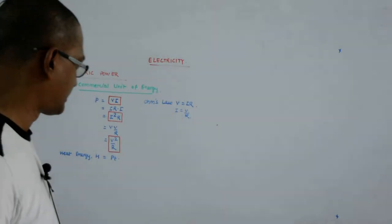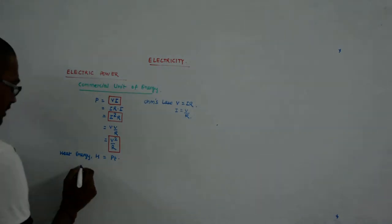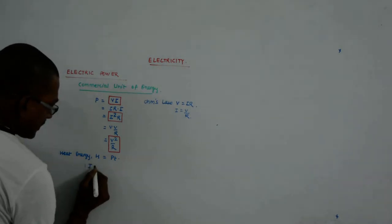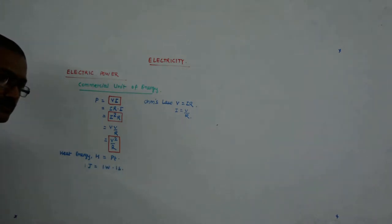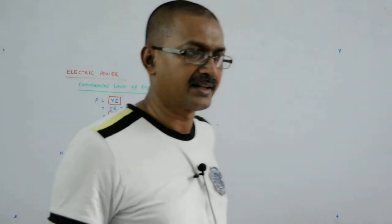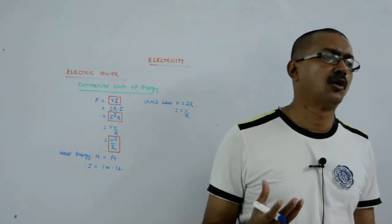Now let us try to understand what is one joule of energy. One joule is one watt into one second. One watt into one second is one joule, and this is a very very small amount of energy.